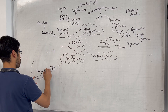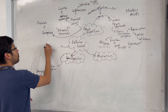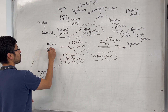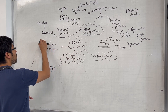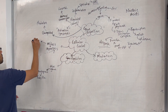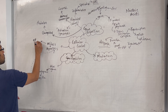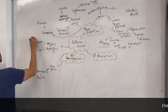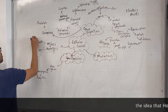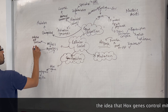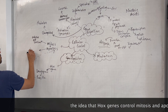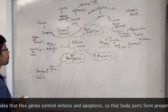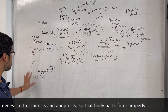Mitosis is controlled cell division, and apoptosis is controlled cell death. Those are needed to set up the right body plan.